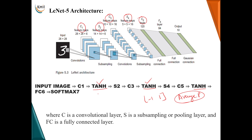The three convolutional layers have the following filters: C1 has 6 filters, C3 has 16 filters, and C5 has 120 filters — so the number of channels increases as we move from one layer to the next. All convolutional layers have a kernel size of 5×5. Key points to remember: the activation function is tanh, average pooling is used, all convolutional layers have a 5×5 kernel, and the filter counts are 6, 16, and 120 respectively.